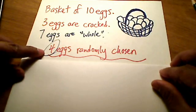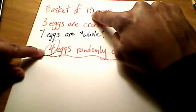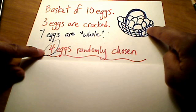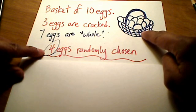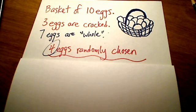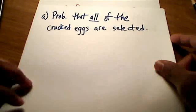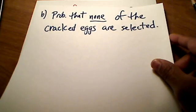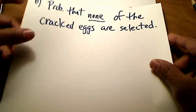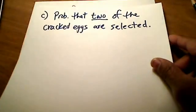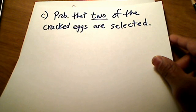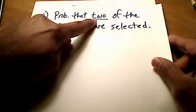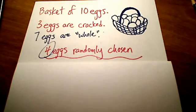We were also told that we're going to randomly choose four out of these 10 eggs. We're going to look at different scenarios: what's the probability that if we choose four eggs, all of the cracked eggs are selected — all three of them? Or what's the probability that none of the cracked eggs are selected? Or what's the probability that two of the cracked eggs are selected? We're going to look at each of these scenarios and I'm going to give you the answers as simplified fractions.